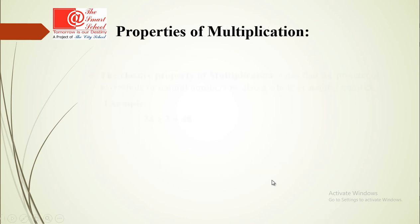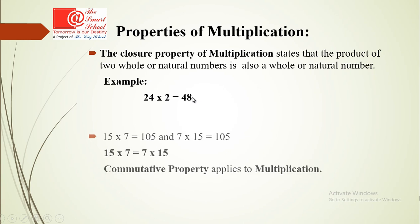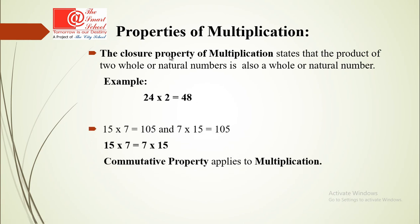Now, properties of multiplication. The closure property states that the product of two whole or natural numbers is also a whole or natural number. For example, 24 multiplied by 2 equals 48 — all three are natural or whole numbers, so closure property is proved. For commutative property: 15 multiplied by 7 equals 105, and 7 multiplied by 15 equals 105. So commutative property applies to multiplication.